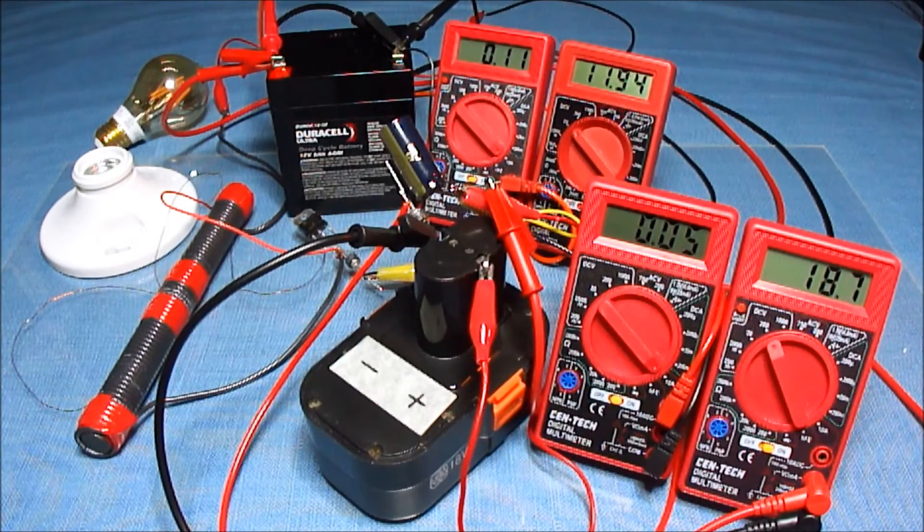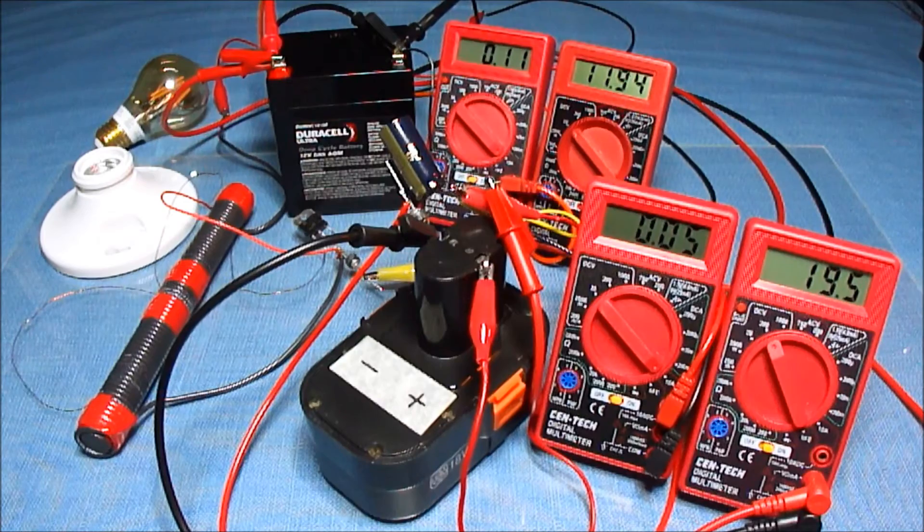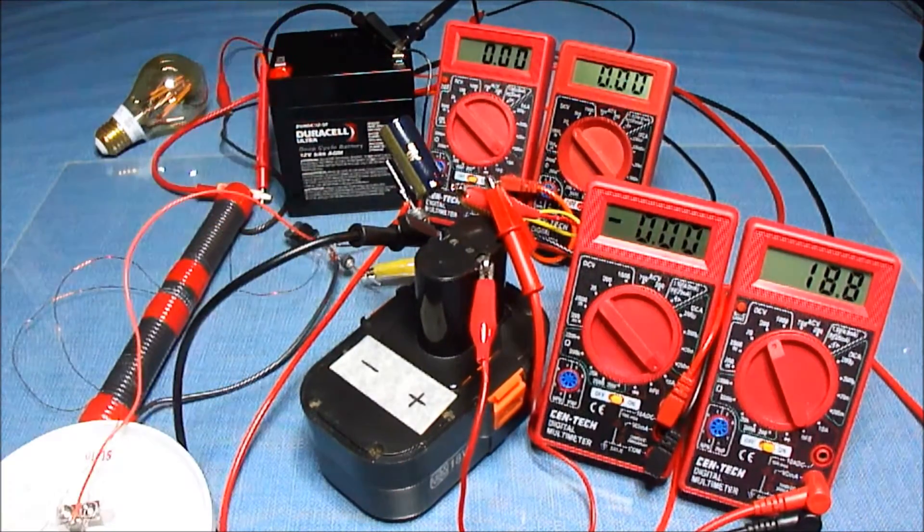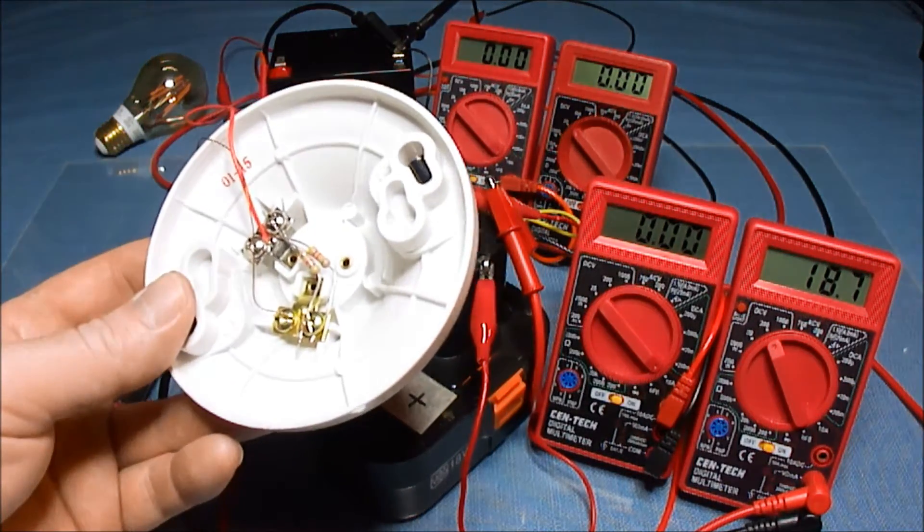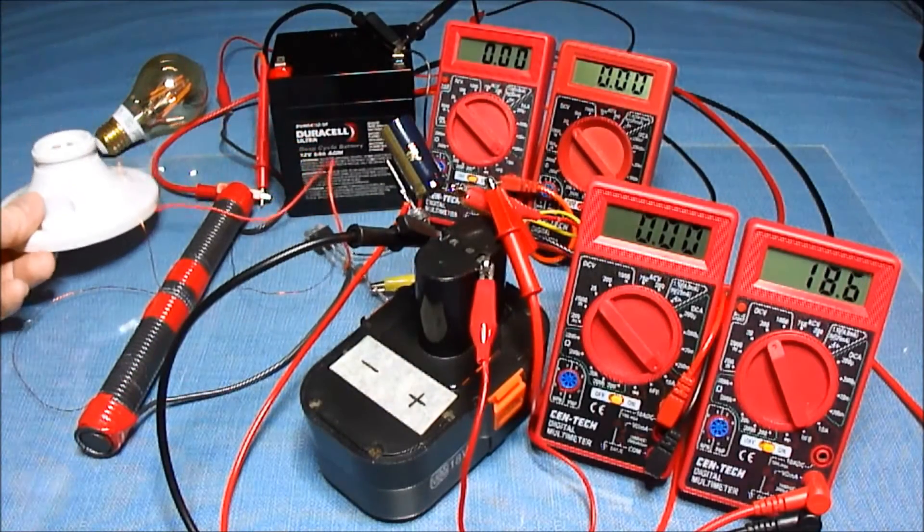I think I'm going to add another 47K in parallel across that one, see if we can get this charging a little faster. Now I have two 47K resistors in parallel across there.